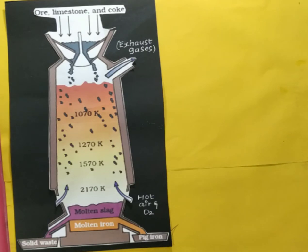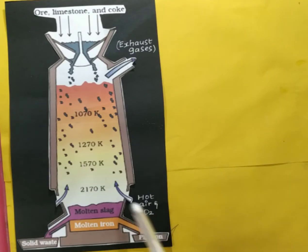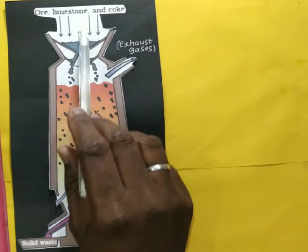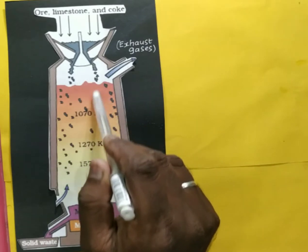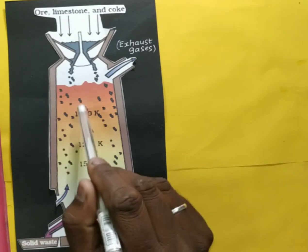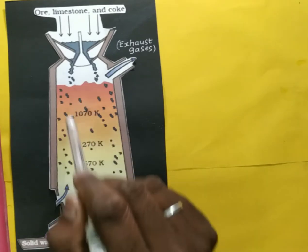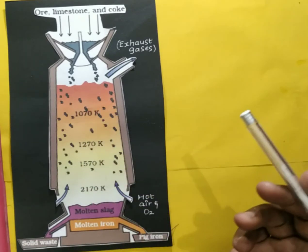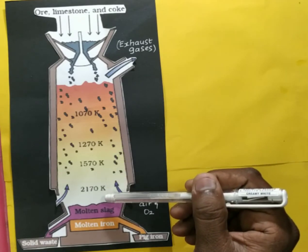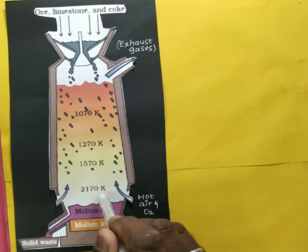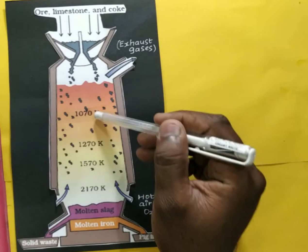The tuyeres produce hot air. We have coke loaded from the top through a hopper — the coke comes downward while the heat goes upward. The heat burns the coke, and the coke burns to give energy in the form of heat. The maximum temperature we get here is 2170 Kelvin. The furnace can be separated into four different zones.